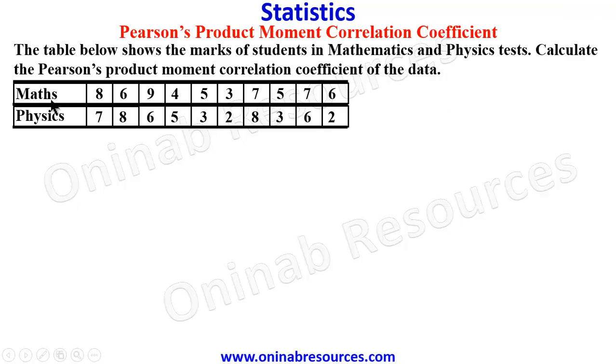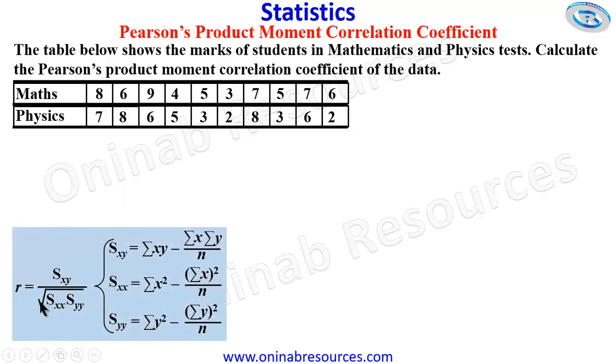So we have the math scores and the physics scores. We start the solution of the problem from the formula. The formula for Pearson's product-moment correlation coefficient is given here.